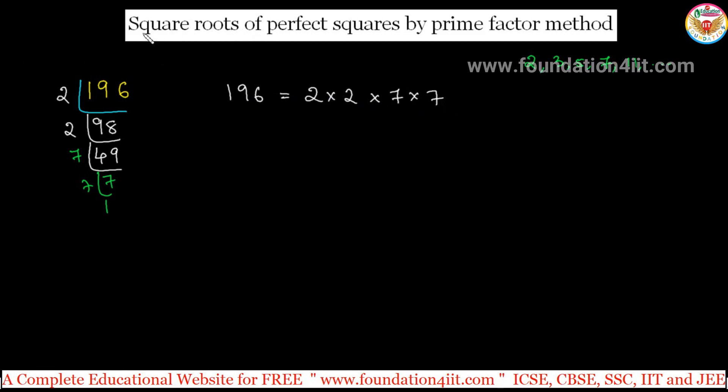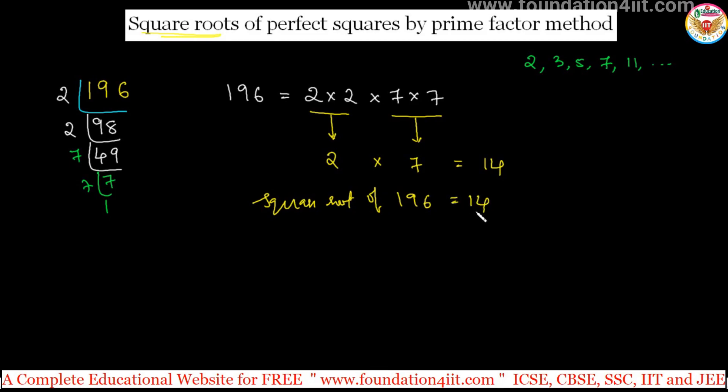Because of the square root, every 2 should take 1. So instead of these 2 twos, take 1 number 2, instead of these 2 sevens, take 1 seven. 2 into 7 equals 14. Therefore, square root of 196 is 14. This is the prime factor method, product of the prime factors you have to make.